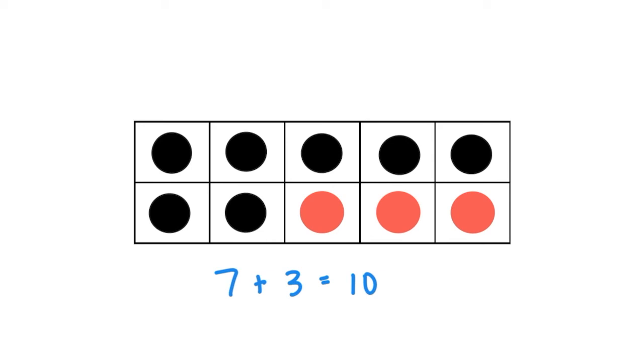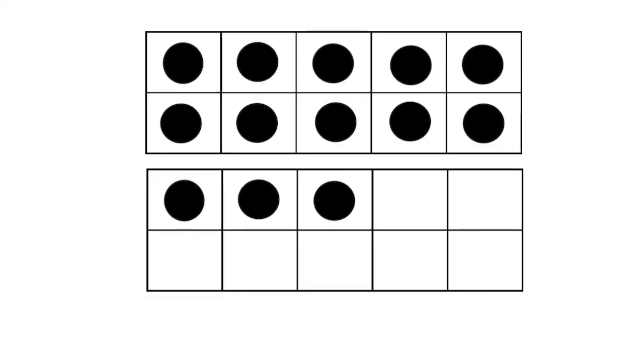Soon, you'll be able to add a second tens frame for larger numbers. Here, students start to recognize that this frame is full, which means it represents the number 10. That means they don't have to count those counters. They have 10, and then they count on 11, 12, 13.